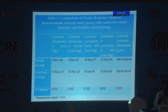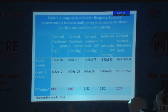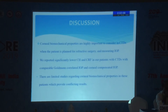In our main result table, the mean corneal hysteresis value was 9.54 ± 1.66 and the mean corneal resistance factor value was 9.95 ± 1.47. Both values were statistically significantly lower in the study group than the control group. We also found significantly higher central corneal thickness in the study group compared to the control group.